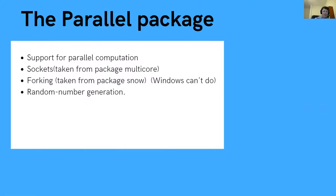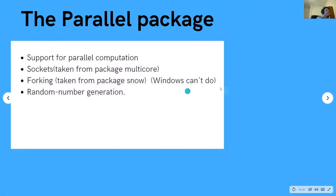There are two ways of doing this: sockets and forking. With sockets, when you make a worker it starts as a blank slate — you have to give it variables, packages, and functions. With forking, each worker node is an exact copy of the master node, so they already come with all the variables and packages you had on your default script. However, Windows can't do forking — don't try to fork on Windows because it won't let you.